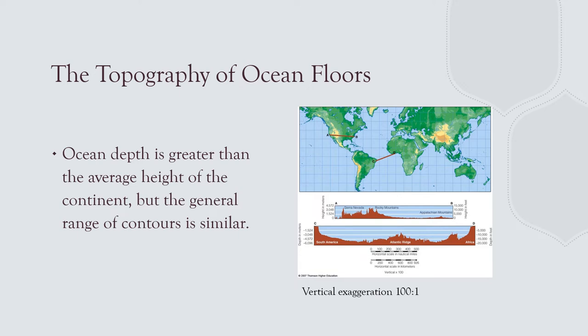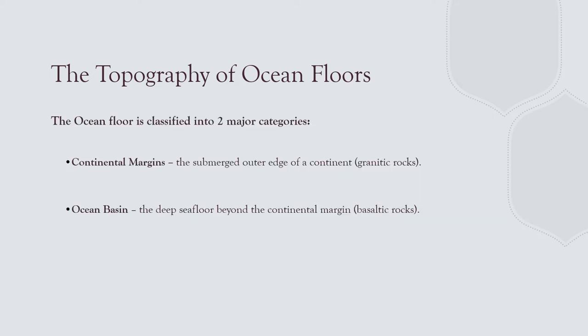If you look at the topography of the ocean floor versus land, they can be similar — both have mountains and other features. Going from the Rocky Mountains across the Great Plains to the East Coast Appalachians, then across the Atlantic: continental shelf, continental slope, abyssal floor, oceanic ridge, abyssal floor, a slight rise due to plate tectonics, then continental slope and continental shelf on the other side. There are two major categories: continental margins — parts of the continent that are underwater — and the ocean floor, which includes the abyssal floor (basaltic), seamounts, guyots, and the oceanic ridge system.